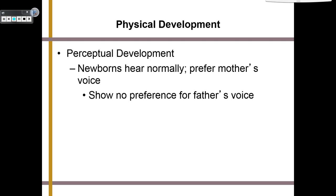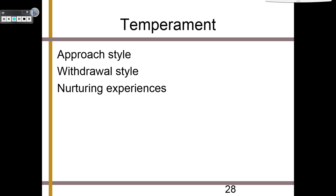When talking about temperament, there are two different styles — either an approach style temperament or a withdrawal style temperament. An approach style temperament is a very friendly baby that will approach anybody. A withdrawal style temperament is a baby that doesn't want to be around people and will actively avoid being around others. This is typically based on nurturing experiences — the more nurturing the environment, the more likely the baby is to be very friendly, whereas a more harsh environment makes them more likely to withdraw from other people.